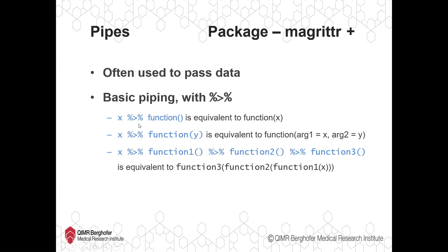We've got some examples here. If you have an object or value — in this case x can be a data set, a vector, or even a single value — and then you have the piping notation followed by your function, that's equivalent to calling the function with x as the first input argument. So when you use pipes, you don't have to write the first object in as the argument — R will understand that the piped object goes to the first argument of the function.